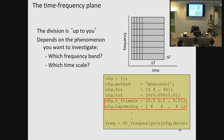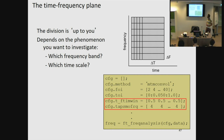The last parameter is cfg.tapsmofrq, which specifies the amount of smoothing. A question arose about what happens when you choose very small time windows for low frequencies. This leads into the trade-off between time resolution and frequency resolution.